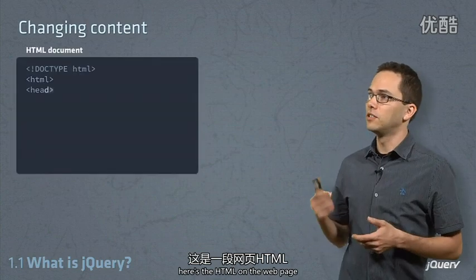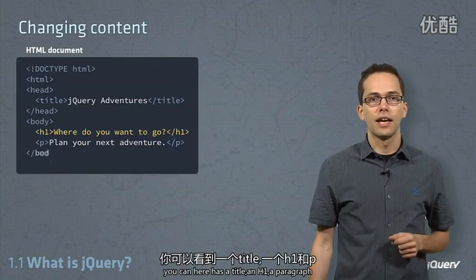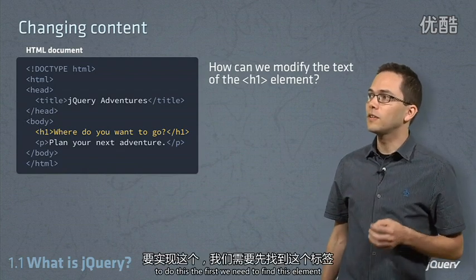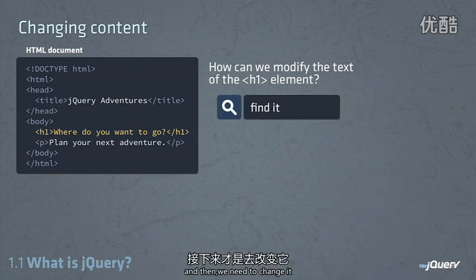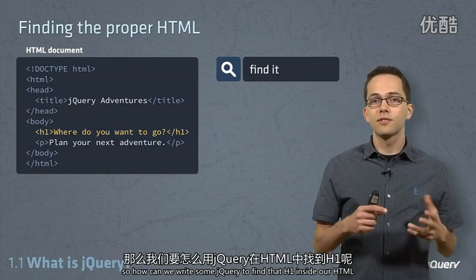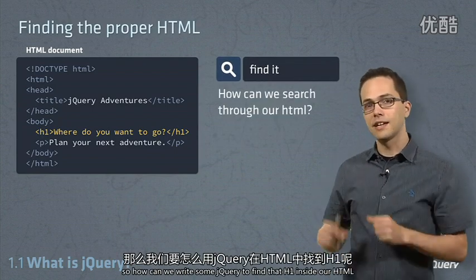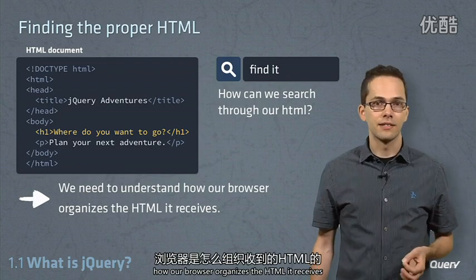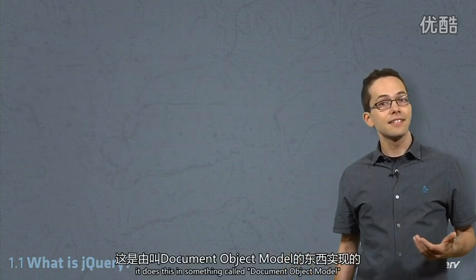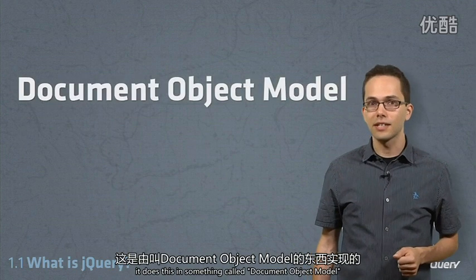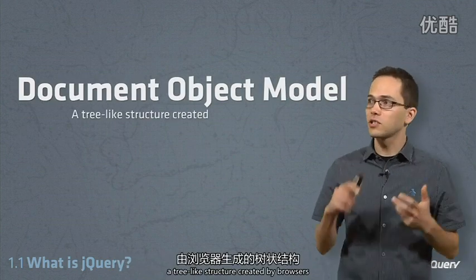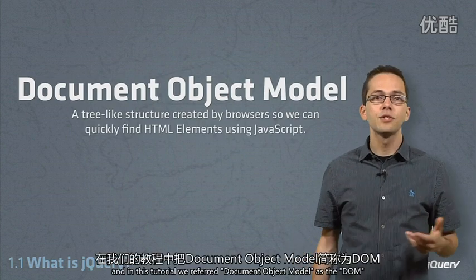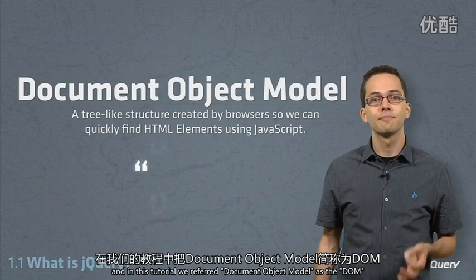Here's some HTML from a web page. You can see here it has a title, an H1, and a paragraph. Our objective is to modify the H1 element using jQuery. To do this, we first need to find this element and then change it. So how can we write some jQuery to find that H1? We need to understand how our browser organizes the HTML it receives, in something called the document object model. In this tutorial, we'll refer to the document object model as the DOM.